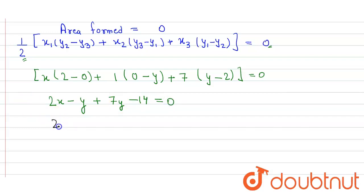Here we further simplify it, we get 2x plus 6y minus 14 is equal to zero.